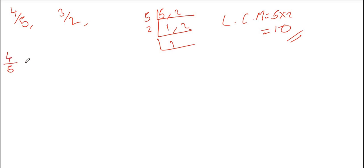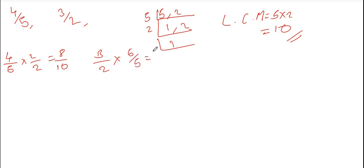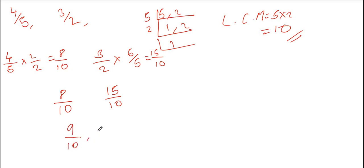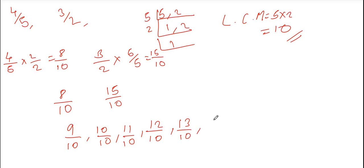For 4/5: multiply by 2/2 to get 8/10. For 3/2: multiply by 5/5 to get 15/10. So the rational numbers between 8/10 and 15/10 are: 9/10, 10/10, 11/10, 12/10, 13/10, and 14/10.